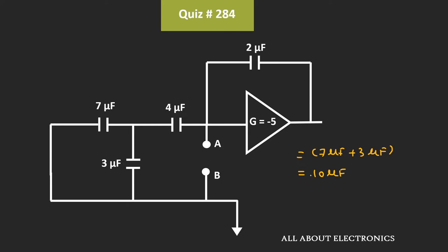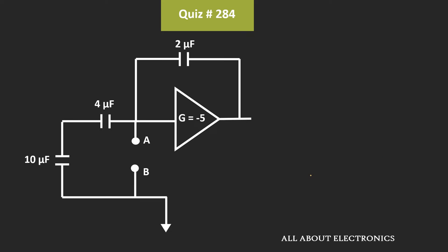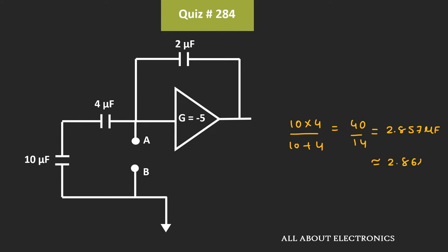If we see the equivalent circuit, then it will look like this. Now, this 10uF capacitor and 4uF capacitor are connected in series. That means their equivalent capacitance will be equal to 10 times 4 divided by 10 plus 4, which is equal to 40 divided by 14 uF. If we calculate the value, it comes out as 2.857uF, or approximately 2.86uF.